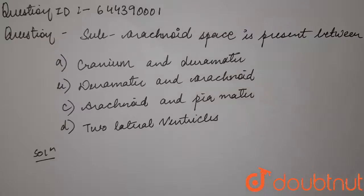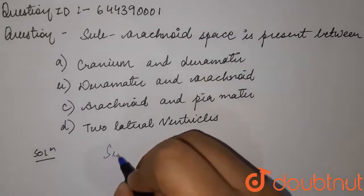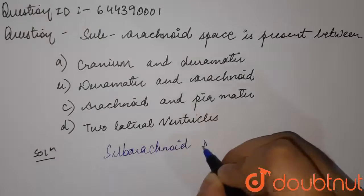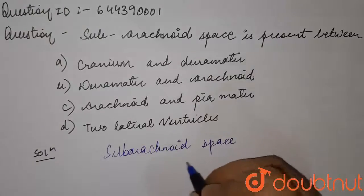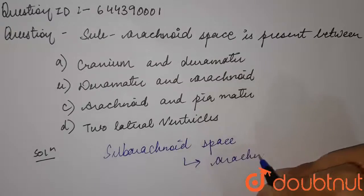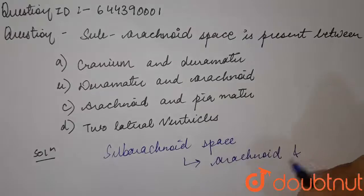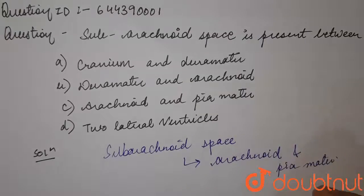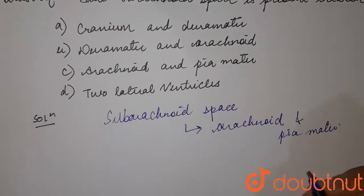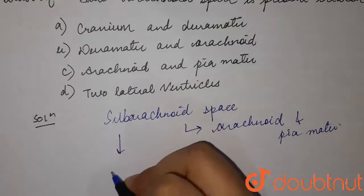So this subarachnoid space - it is the interval between, or gap between, arachnoid membrane and the pyameter. And it is occupied by delicate connective tissue, and they also contain CSF, which is cerebral spinal fluid.